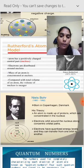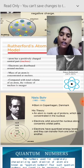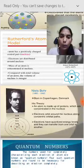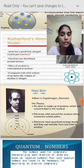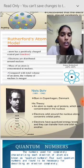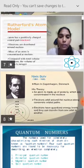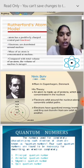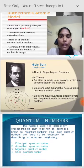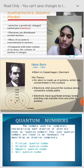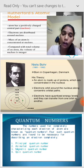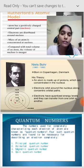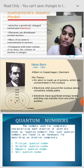First point: an atom has a positively charged central part — the central part is nothing but the nucleus. Second point: electrons are distributed around the nucleus. Third point: the mass of an atom is concentrated at the nucleus. Fourth point: compared with the total volume of an atom, the volume of the nucleus is meager — meaning a deficient or very small amount. That completes Ernest Rutherford's Atomic Model.